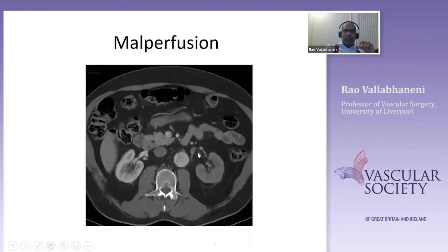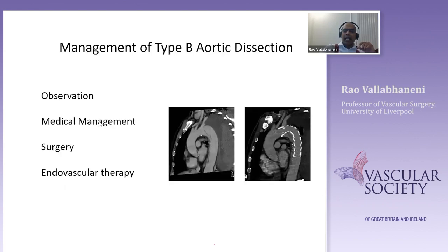A CT scan example is shown where, although the distinction between true lumen and false lumen opacification is difficult to see to the naked eye, there is a stark difference in how the right kidney lights up versus the left — showing variance in hemodynamics, with the left kidney being relatively malperfused. The general approach is to medically manage them, certainly for the first 14 days, with failure of medical management being a clear-cut indication for intervention.